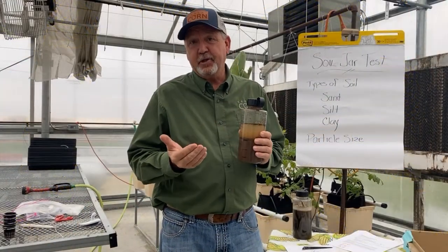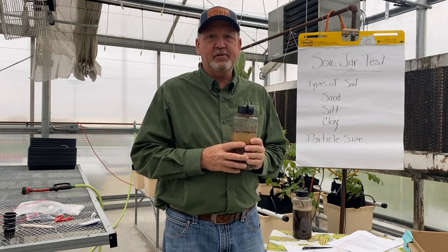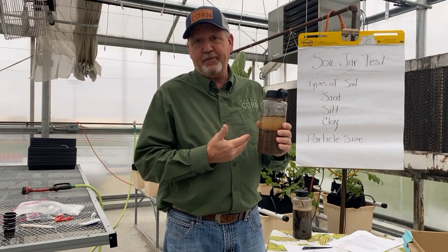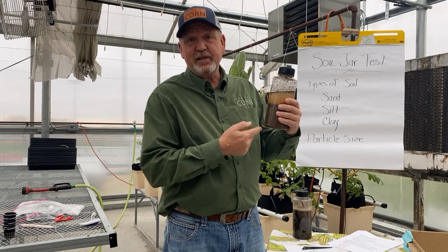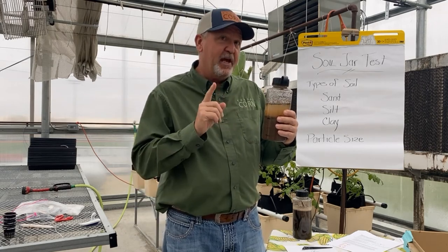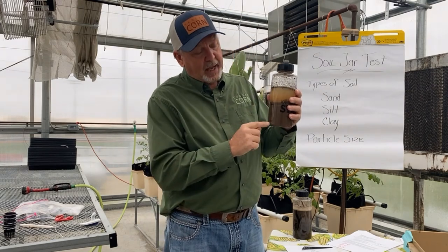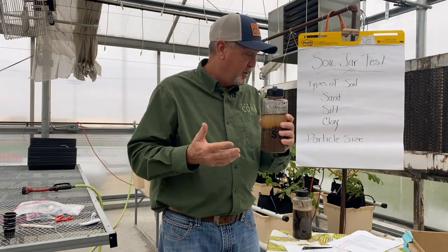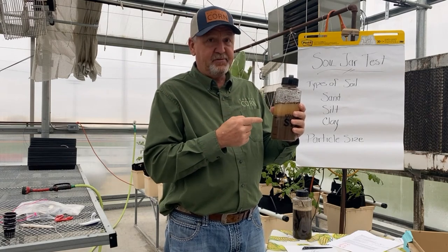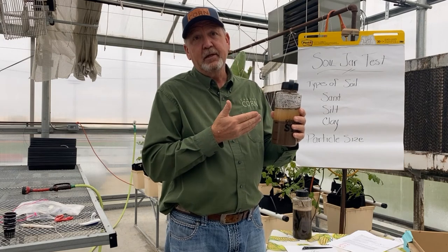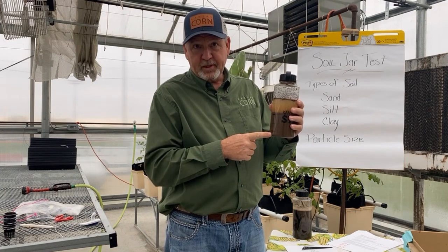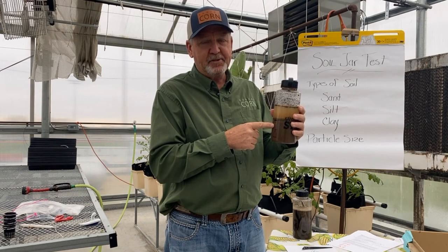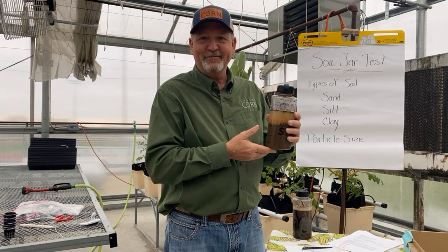I think you now understand how to do the jar test and how to interpret the results. But let me throw out a little challenge for you. I did my own jar test with the soil from my own farm. I measured it — there is 78 millimeters of soil in this jar. I drew lines where the soil separated: there's 20 millimeters of sand, there is 25 millimeters of silt, and there is 33 millimeters of clay — 20 of sand, 25 of silt, and 33 of clay out of 78 millimeters. What kind of soil do I have? Good luck. Have a great day.